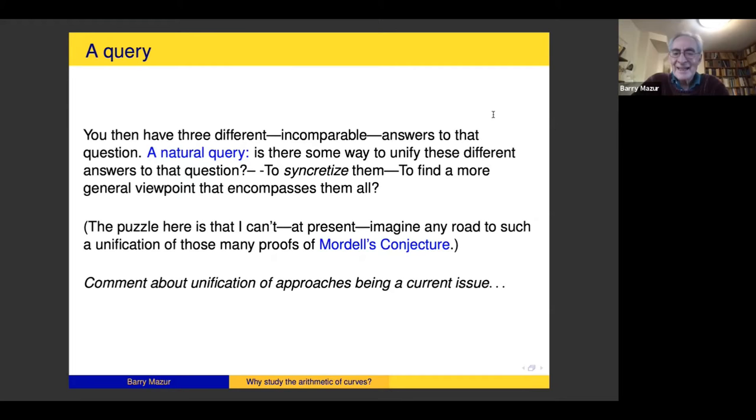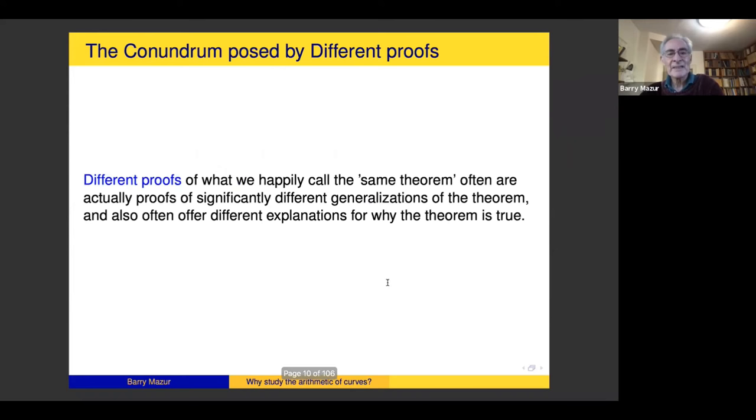Now the thing is, I can't at present imagine any road to making such a unification of the many proofs of Mordell's conjecture. It's a very current issue to unify these approaches. For example, yesterday I went to a lecture where a fourth way of proving Falting's theorem was being unified with the third way I'm going to tell you tonight. And the unification is in some sense a conjunction or a merging rather than an overarching unification. So it's not only an interesting question and has concerned me for years, but it's very topical, it's very current and people are trying to really do it.